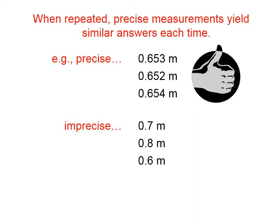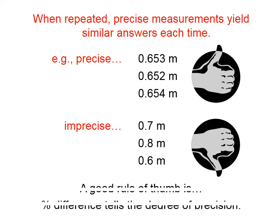On the other hand, if you and your two lab partners measure these values, those are not very precise. A good rule of thumb is that the percent by which your measurements differ gives you a good idea of how precise your measurements are. You can see that in these top three measurements, the percentage by which they differ is very, very small.